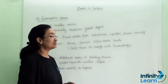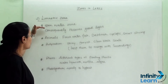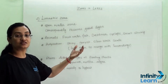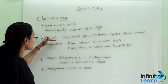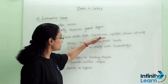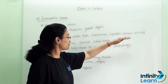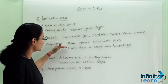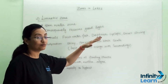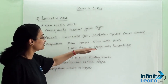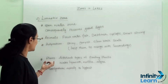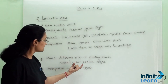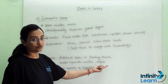Our second zone of the lake is the limnetic zone. It is an open water zone, which is why it receives good light and continuously receives fresh water. The animals staying here are freshwater fish, Daphnia, Cyclops, and small shrimps. Their adaptation is that they have a shiny grayish-silver-black scaled body, which helps them merge with their surroundings. Plants found in this zone include different types of floating plants, water hyacinth, Wolffia, and different types of algae.